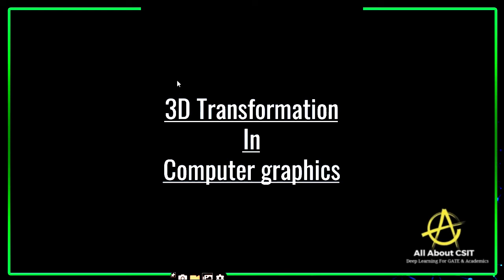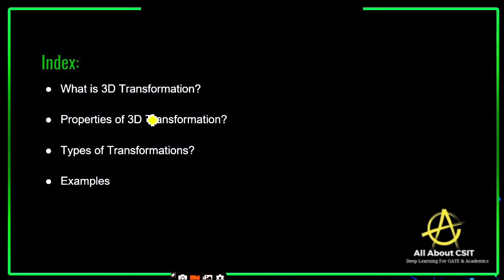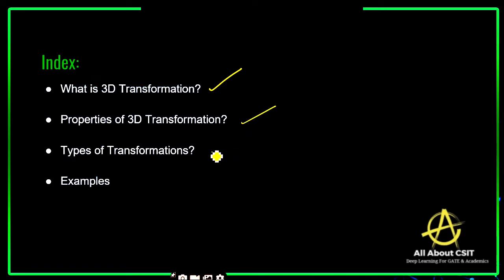Today we will see another topic in computer graphics: 3D transformation. In this video I am going to cover what exactly 3D transformation is, what are its properties, and the different types of transformations — rotation, scaling, translation, and shearing. We will discuss those concepts with examples.